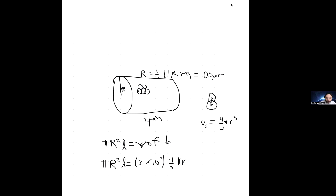Looking at this equation, we realize there's actually only one unknown, which is little r. We know big R because the diameter was one micrometer, so big R is 0.5 micrometers, and L is two micrometers. Also, pi appears on both sides so we can cancel it out. We divide R squared times L by three times ten to the six times four-thirds, then take the cube root to get little r in micrometers. We'll want to convert to nanometers for our final answer.